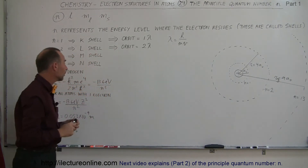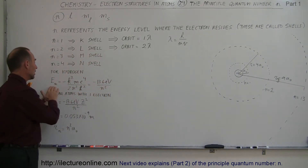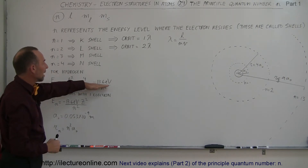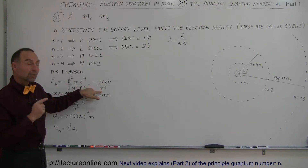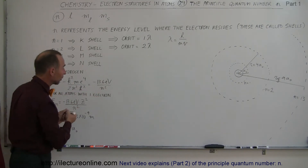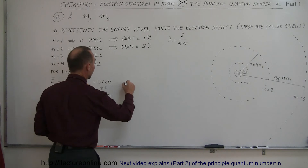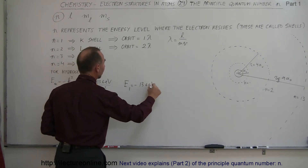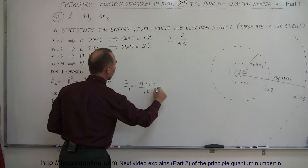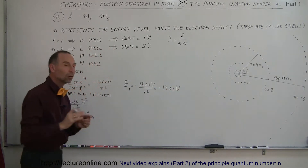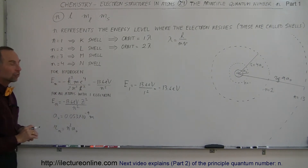We also discovered that the energy of the innermost orbit is minus 13.6 electron volts divided by the quantum number squared. For the first energy level, E sub 1 equals minus 13.6 electron volts divided by 1 squared, which is simply minus 13.6 electron volts. That is the lowest energy level in the hydrogen atom.